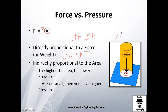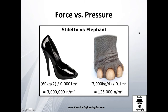If the weight is constant and you're changing area, you're going to change pressure. If your area is constant but your weight is variable, you're also going to change the pressure. For example, imagine this girl is only 60 kilograms in weight. She has two feet, so we're going to divide that by two.